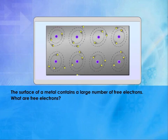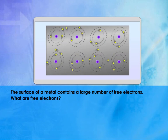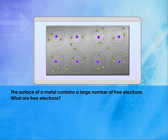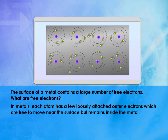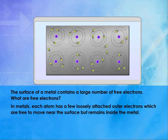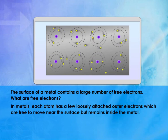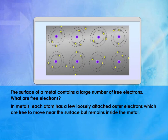The surface of a metal contains a large number of free electrons. What are free electrons? In metals, each atom has a few loosely attached outer electrons, which are free to move near the surface, but remain inside the metal.